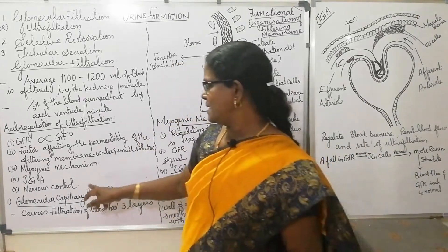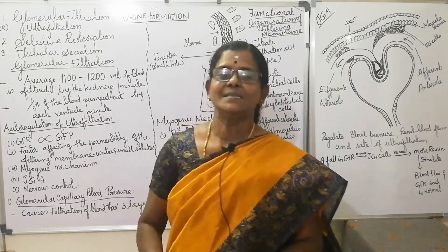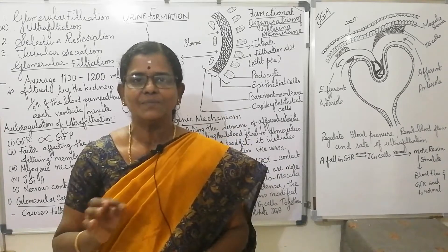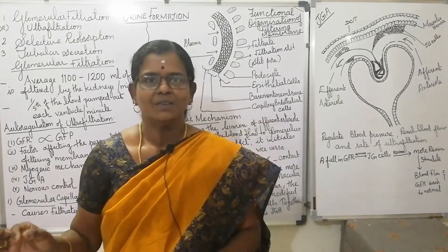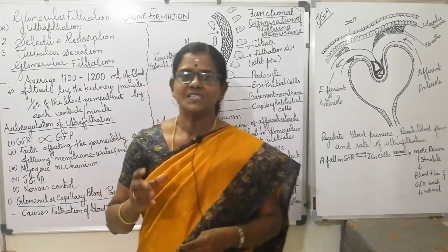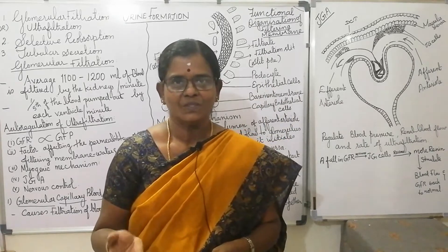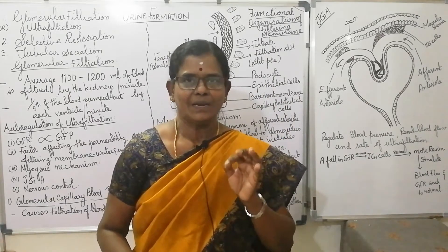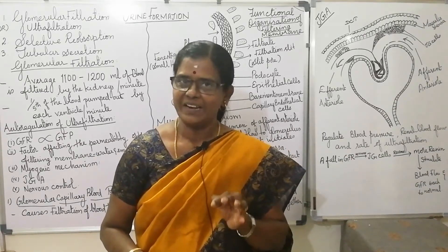Finally, nervous control. Sympathetic nerve fibers of the autonomic nervous system stimulate vasoconstriction of the renal artery, which decreases renal blood flow and glomerular filtration rate.